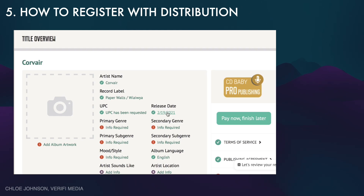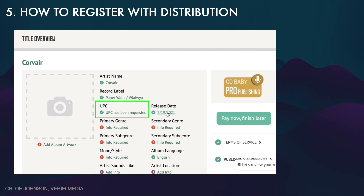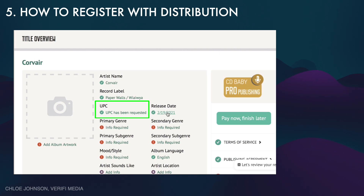For those acting as your own label or self-distributing, you will be familiar with putting your music through a distributor. Here is an example of CD Baby — they ask for information you would expect: release date, record label, genres. You will also have the opportunity to request a UPC, or an EAN number if you're outside of North America, which is the product code. If it's the first time this product has been released, request one from your distributor. If it already has a product code and you're distributing the exact same product, you may already have a UPC and won't need to request one.